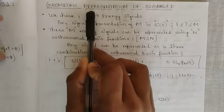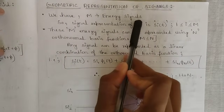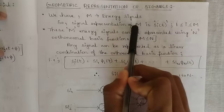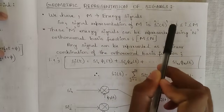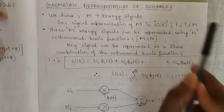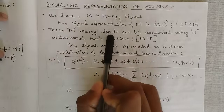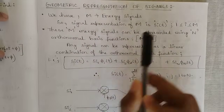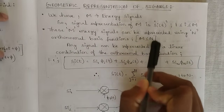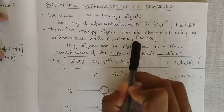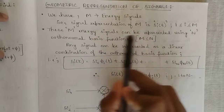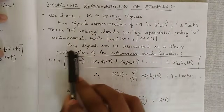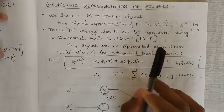We should know some parameters. The letter M suggests the number of energy signals. The signal representation of this set of M energy signals is given by SI of T, where I ranges from 1 to M. These M energy signals can be represented using N orthonormal basis functions, where M is less than or equal to N. So the M energy signals are less than or equal to the N set of orthonormal basis functions used.